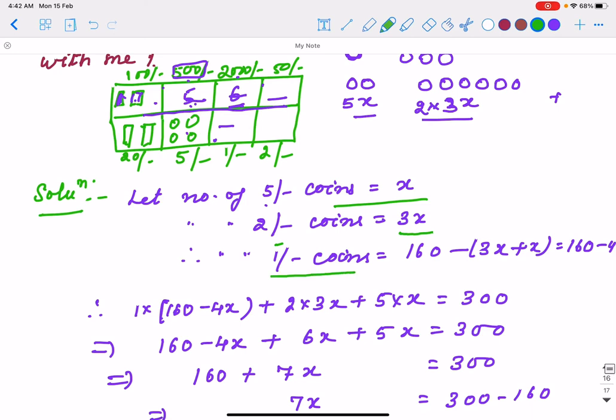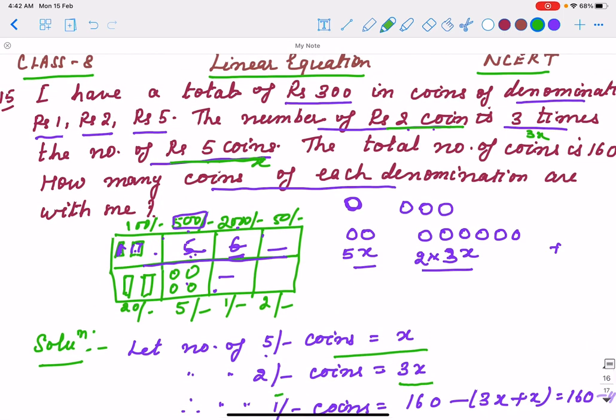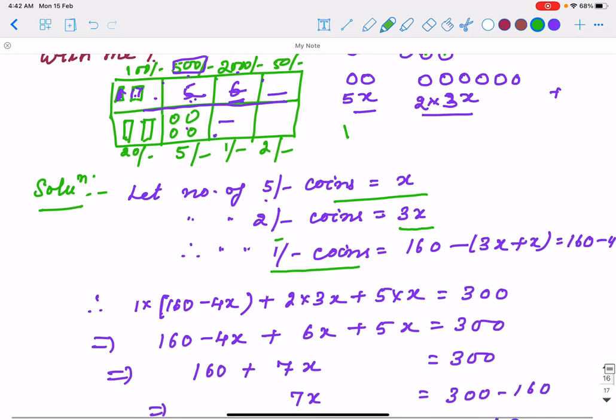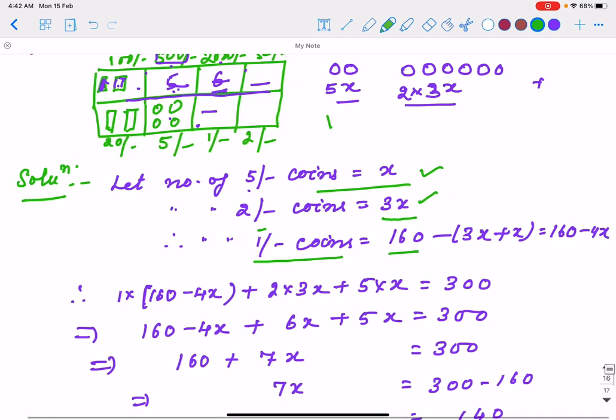Now 1 rupee coins will be how much? We know the total number of coins—how many coins there are in total. If you count, the total is 160 coins. If we subtract from 160 the 5 rupee coins and 2 rupee coins, that will be 1 rupee coins.